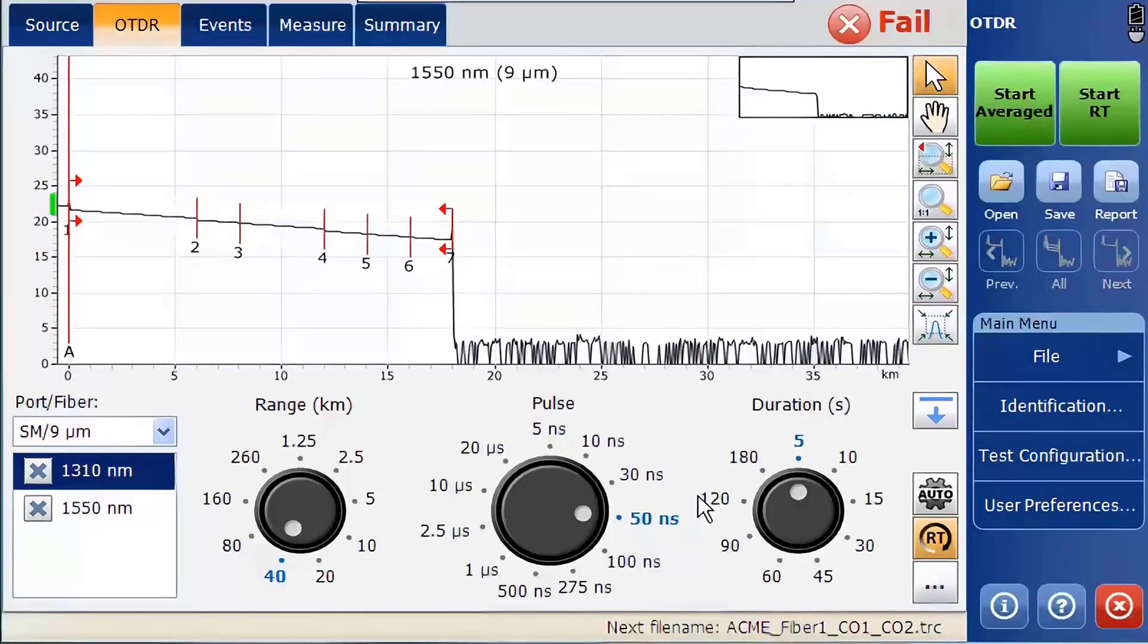Auto mode can be a helpful tool for finding the initial settings for your OTDR test for optimized general performance. These settings can later be adjusted for the specific needs of the test. To do this, start by selecting the auto mode, then starting an average test.